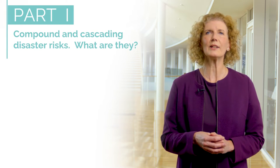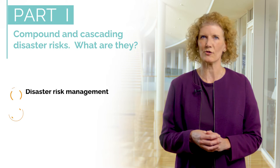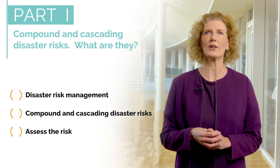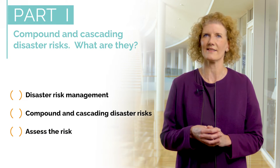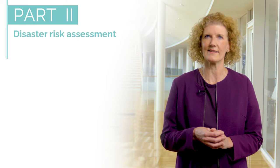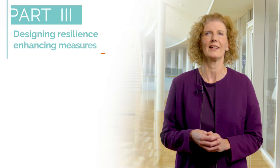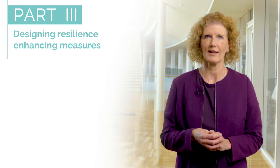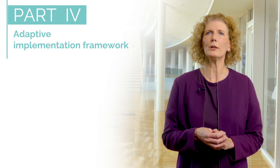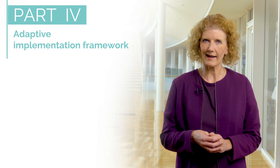We strongly recommend that you go over the video lessons of the course in chronological order. The first part will start by briefly reviewing the essential concepts of disaster risk management like hazard, risk, vulnerabilities and exposure, then introduce the concept and characteristics of compound and cascading disaster risks. In the second part, we will assess the risks of your community to compound and cascading hazard scenarios with a six-step process. The third part will introduce how to design resilience strengthening measures to prepare for disasters and then respond to and recover from them. The fourth part will guide you on how to implement the measures for disaster risk management in the plans and policies of your community.